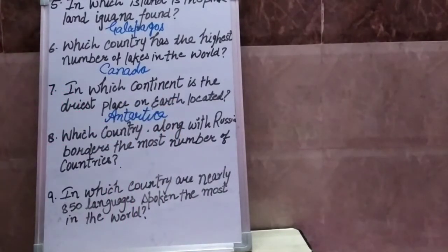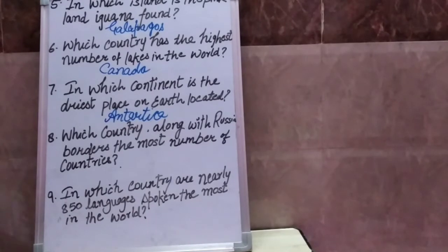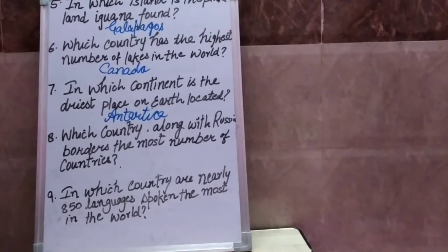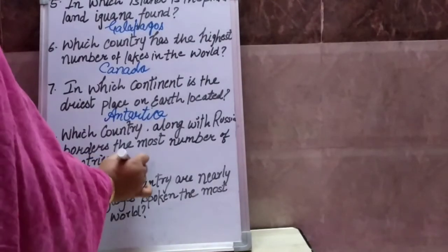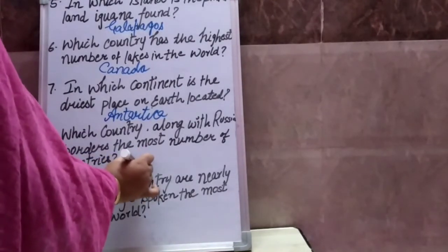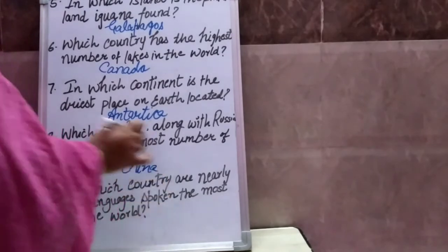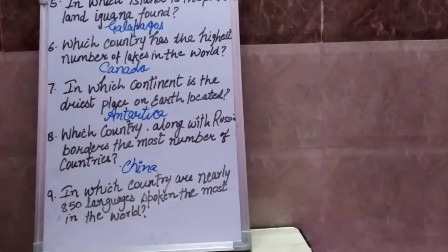Question number eight: Which country, along with Russia, borders the most number of countries? Koun sa desh Roos ke saath sabse adhik deshon ki seema banata hai? Your answer is China — China hai, jo Roos ke saath sabse adhik seema banata hai.